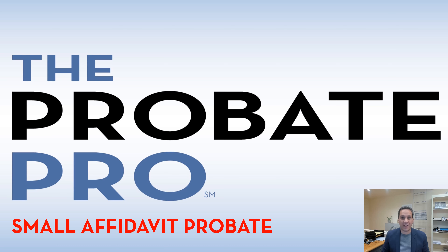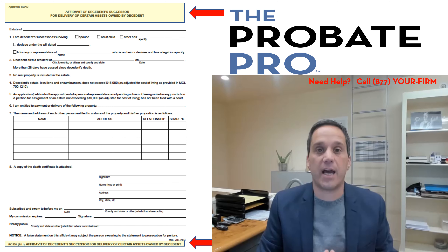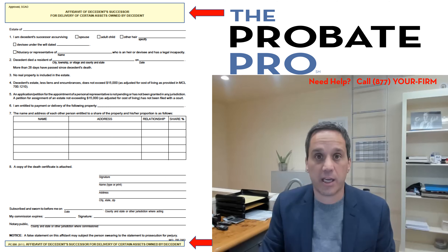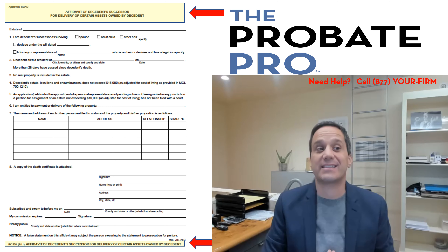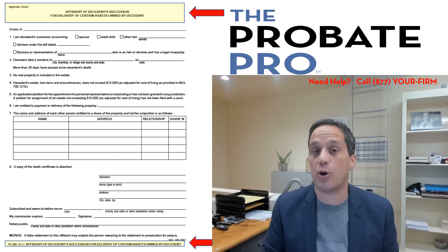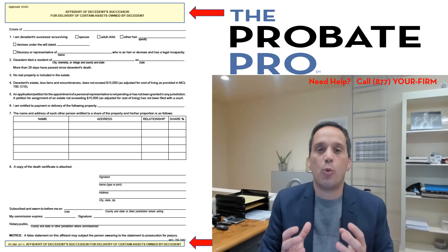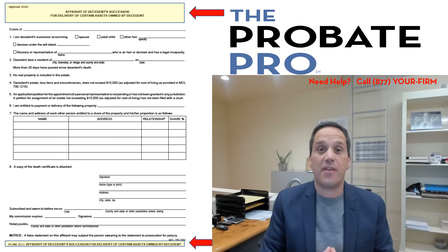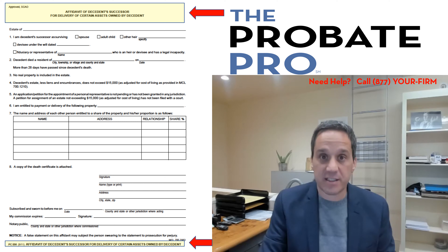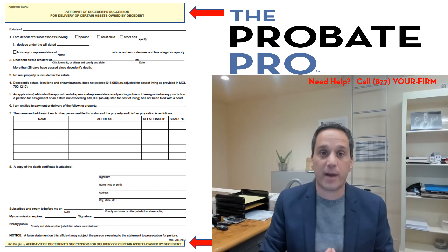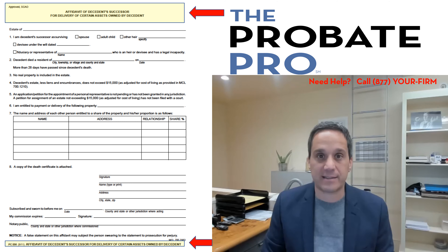There's not a lot of money in the bank account and you really don't want to open up a probate estate. I'm Darren Findling from The Probate Pro. We're going to walk through a particular type of process afforded in Michigan called an Affidavit of Decedent Successor for Delivery of Certain Assets Owned by Decedent. That's a big mouthful for essentially a one-page affidavit process that allows you to gain access to monies that belonged to the decedent and are under a certain threshold amount of money without the necessity of going through the extensive probate process.